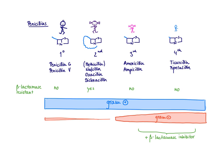For the penicillins, we have four generations, and I like to think about them like a family. Generation one is the father, the second generation is the mother, which is a little bulky — a more bulky molecule, as you can see here. Then we have the kids: third generation is the daughter, also a little more bulky than the little boy, the fourth generation.